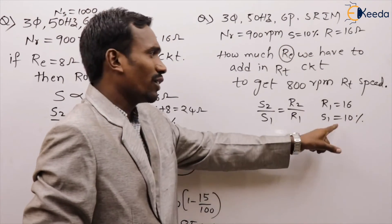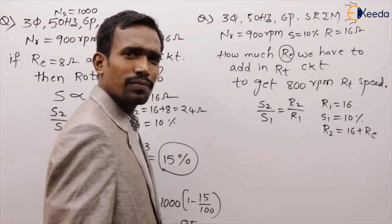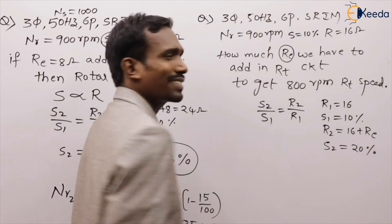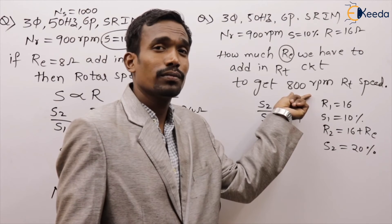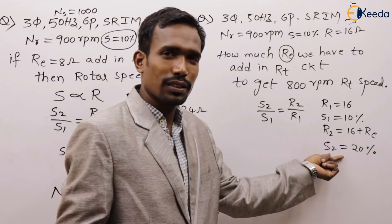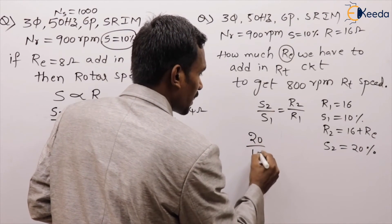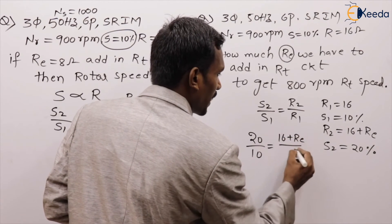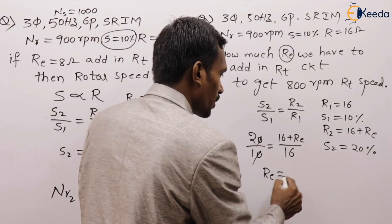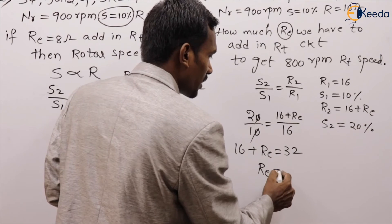s1 is 10%, R1 is 16 ohms, and R2 is R1 plus extra resistance. What is s2? The rotor is rotating at 800 rpm. Ns minus Nr equals 1000 minus 800 equals 200. So s2 equals 200 divided by 1000 equals 20%. Substituting: 20% divided by 10% equals (16 plus extra resistance) divided by 16.